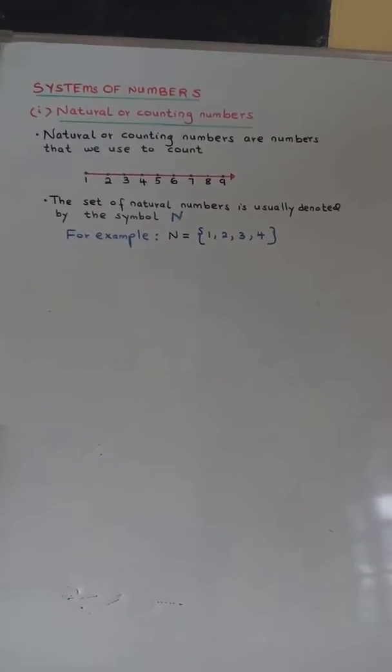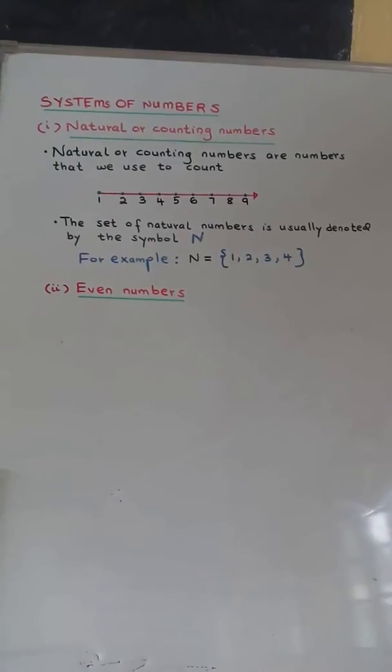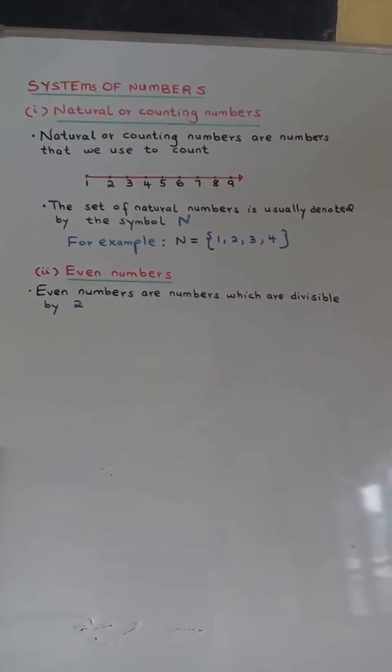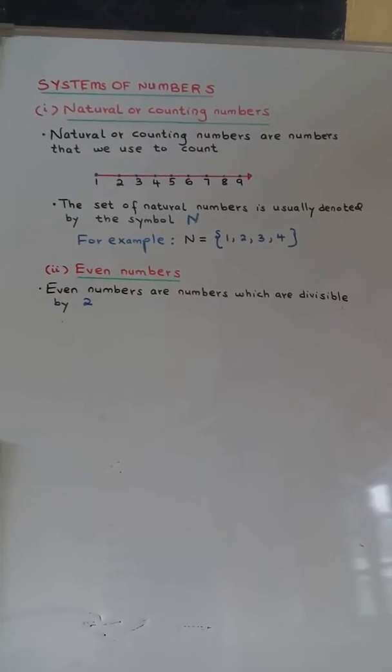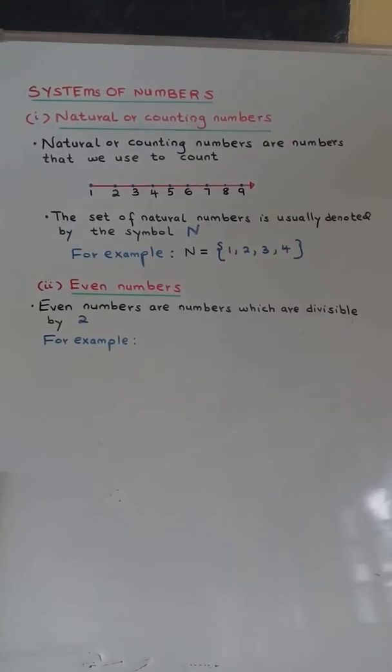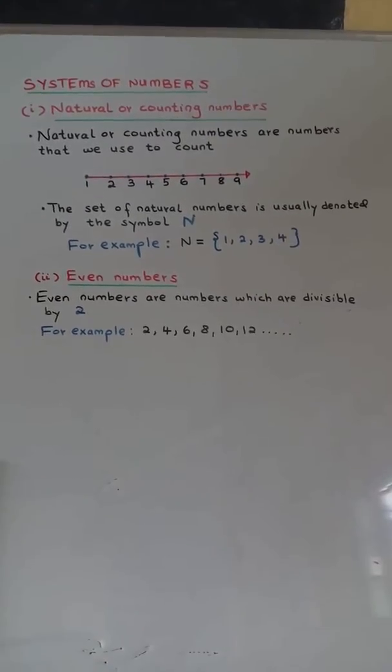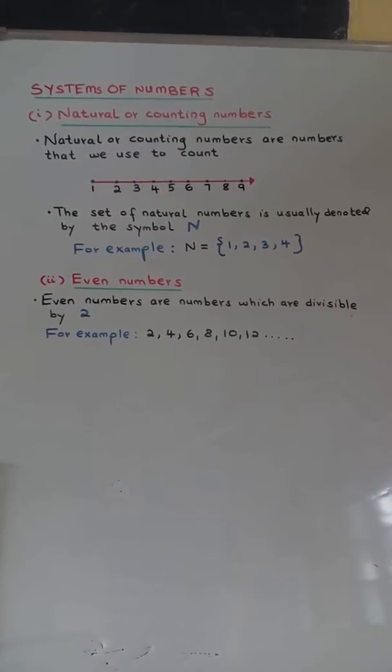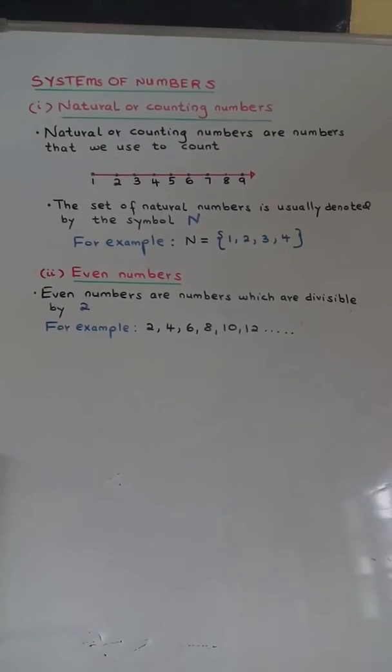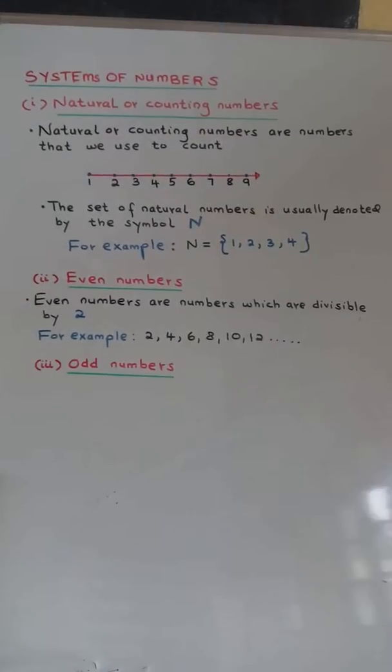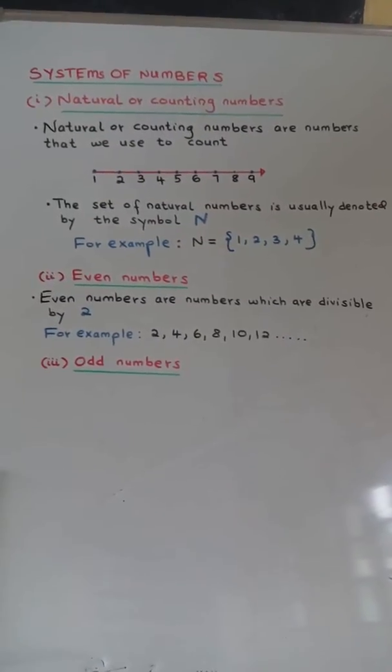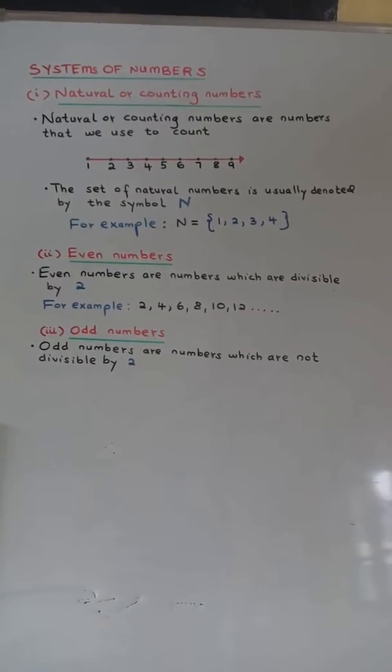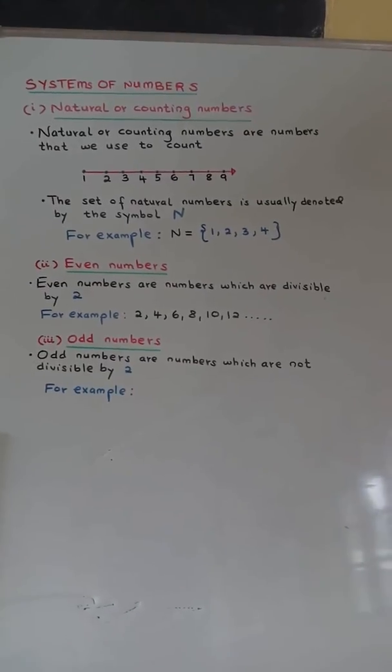Even numbers. Even numbers are numbers which are divisible by two. For example: 2, 4, 6, 8, 10, 12, and so on. Odd numbers. Odd numbers are numbers which are not divisible by two.